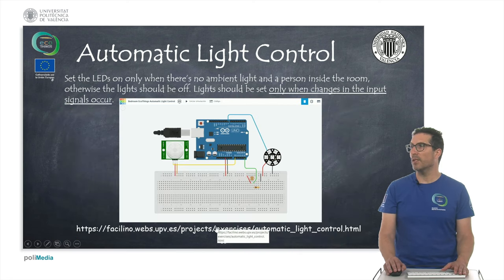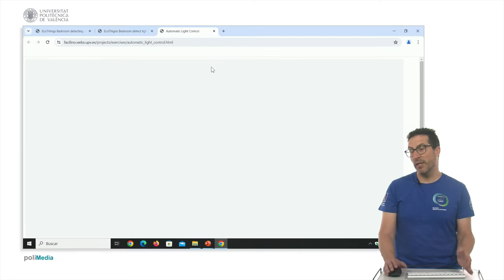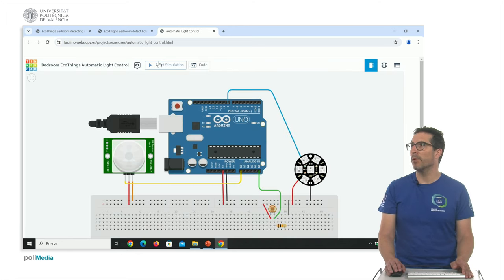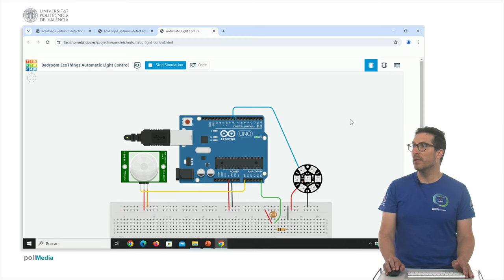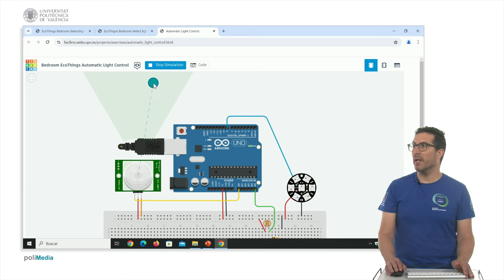So let's see how this works on a real example, I mean on a simulated example. Let's start the simulation right now. If there's light, the lights are off. Ambient light, they're off. If there's no ambient light, but there's no one there, the lights still are off. But if someone enters into the room, then the lights turn on.